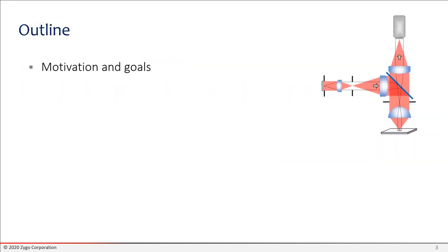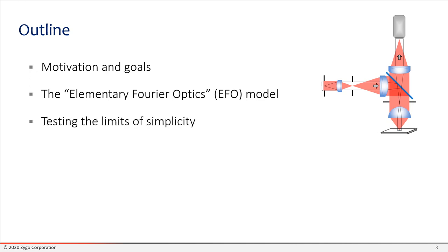We'll begin with motivation and goals. Why are we working on this? Then I'd like to introduce this elementary Fourier optics or EFO model. It's a basic model of an interferometer that includes the optical imaging properties of the instrument. Then we'll take a look at what the limitations are. What are the boundaries of usefulness for such a model?